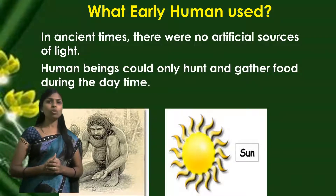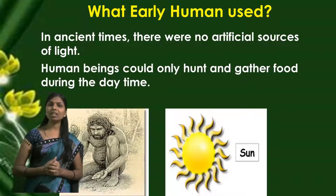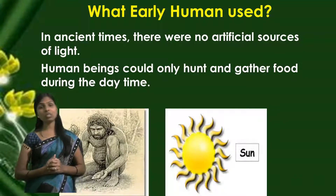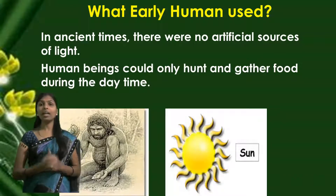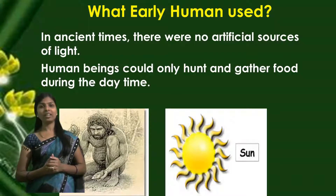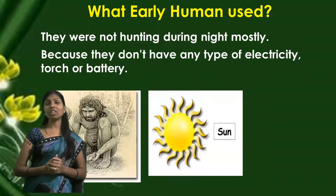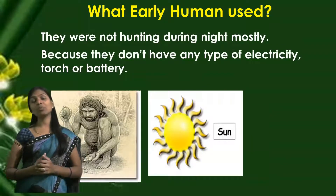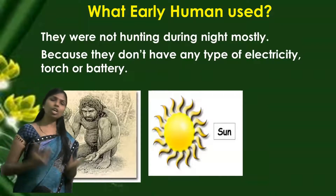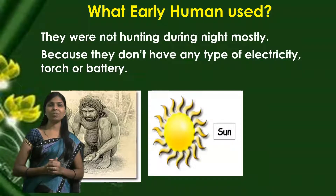Human beings could only hunt and gather food during the daytime because they did not have any type of light at night. They were not hunting during the night mostly because they had no torch and no electricity.